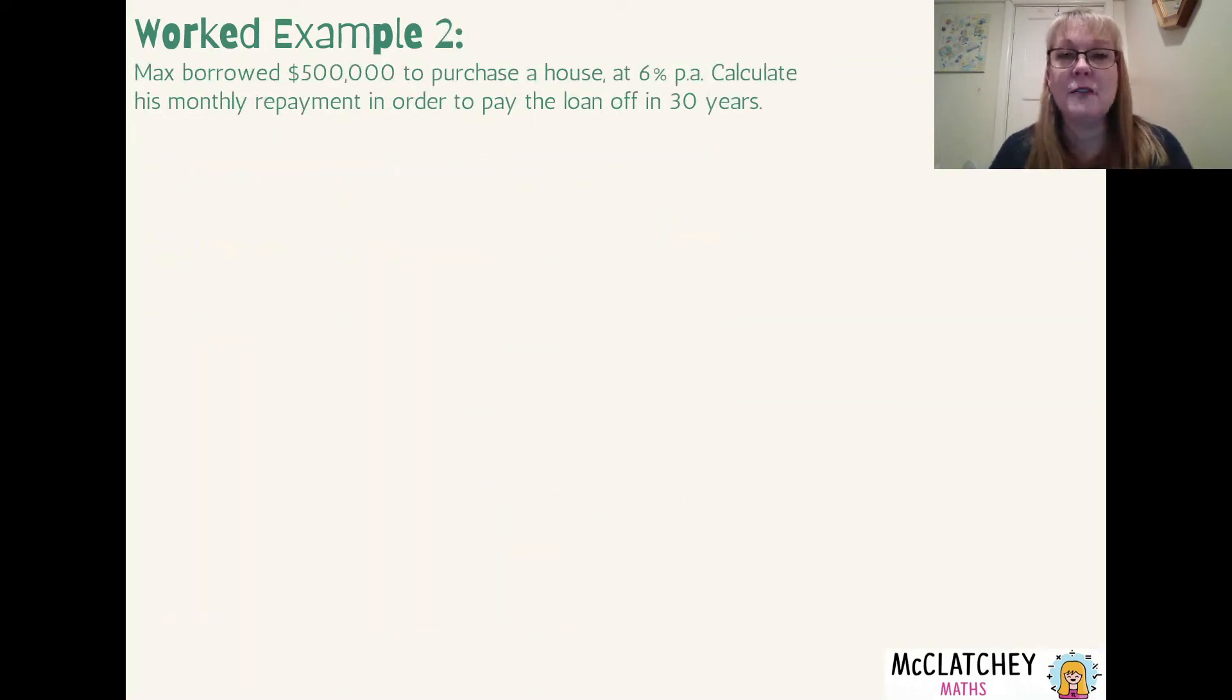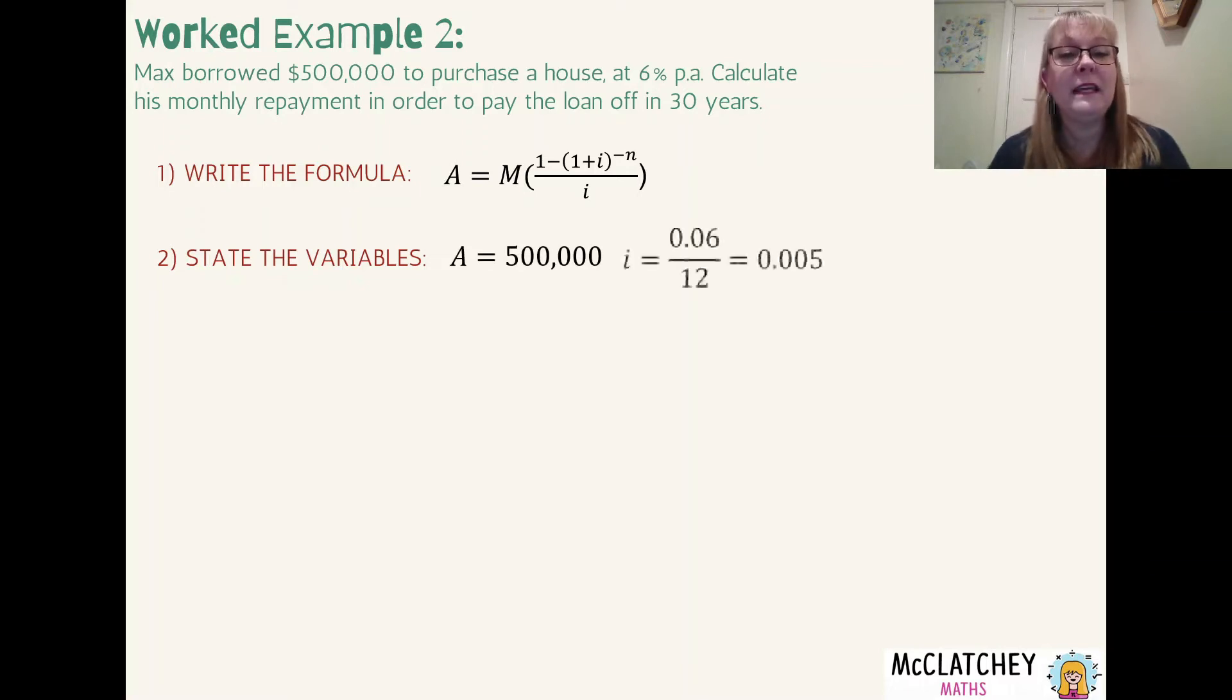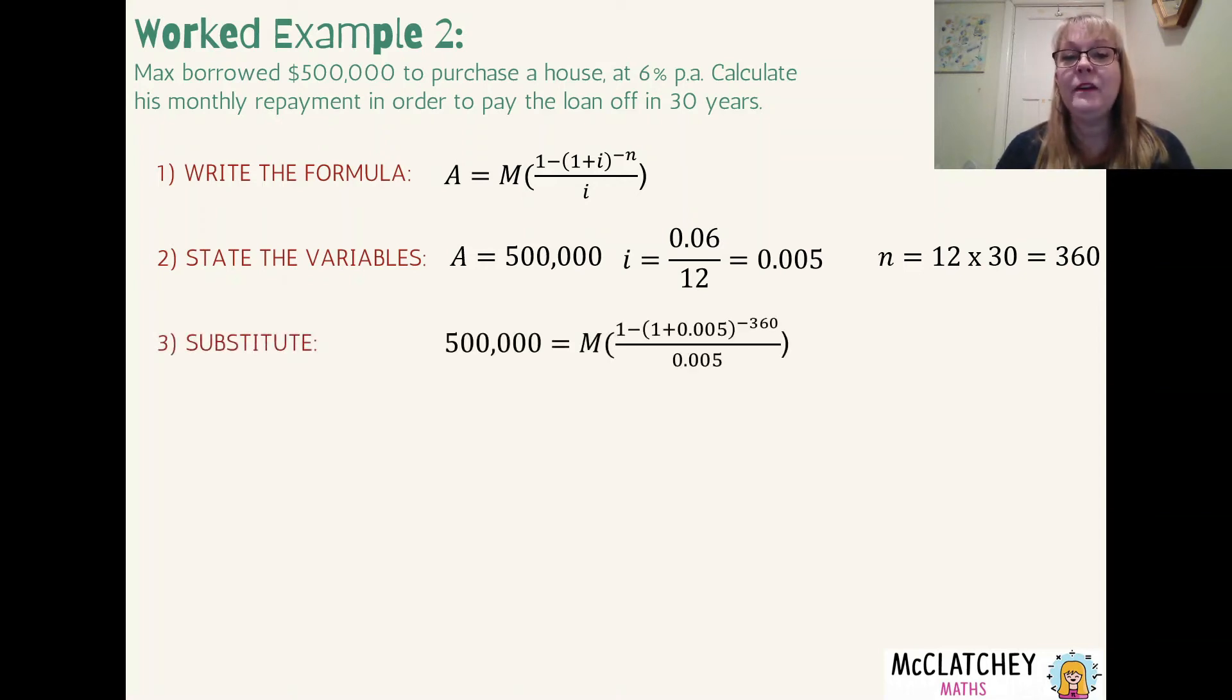Let's jump into our second worked example using our reducing balance loans context. This would be a complex familiar question on an external exam. Max borrowed $500,000 to purchase a house at 6 percent per annum. Calculate his monthly repayment in order to pay the loan off in 30 years. So we need to know in our heads it's a reducing balance loan and therefore we need to make sure that we are applying the right formula which is our present value formula and we're trying to work out that monthly repayment M, so we're going to be rearranging this formula to work out what M is. So let's write our variables to start with. A is $500,000, that's the amount of the loan at the very beginning. And we're going to convert that interest rate into a monthly rate of compounding which is 0.005. And we've got a total of 360 repayments all together. So let's now put that into our formula and we're going to evaluate that to get M all by itself.